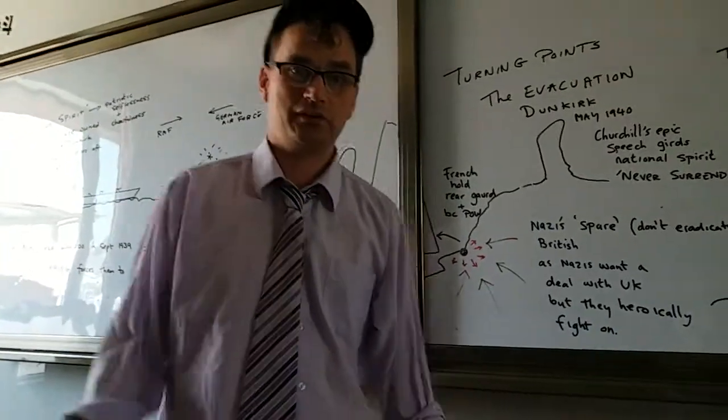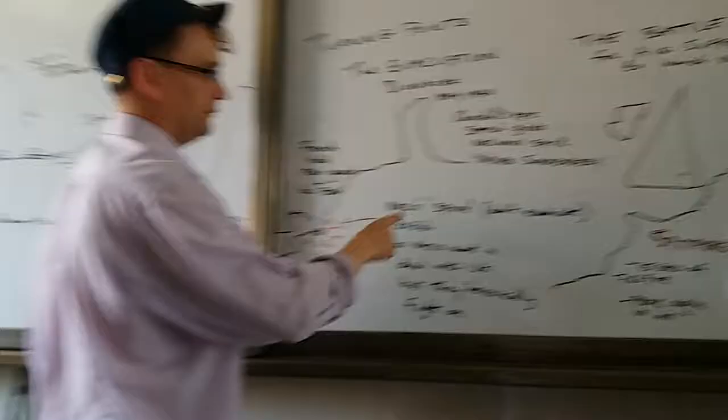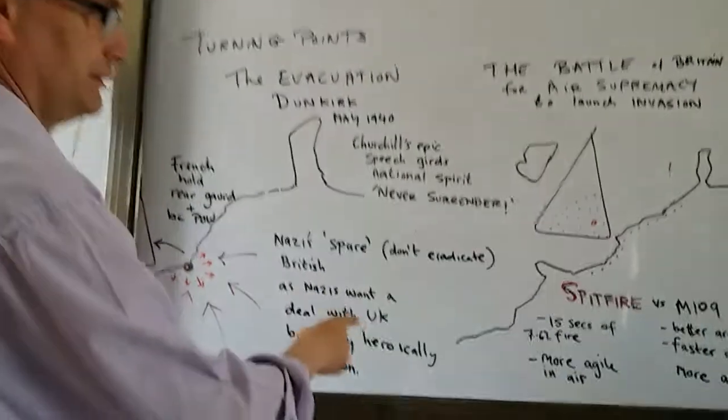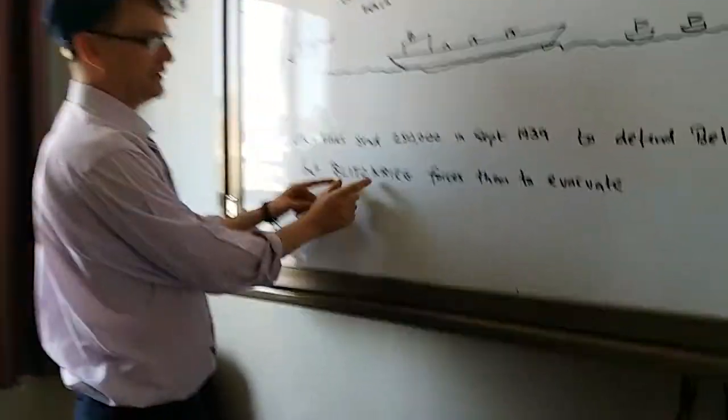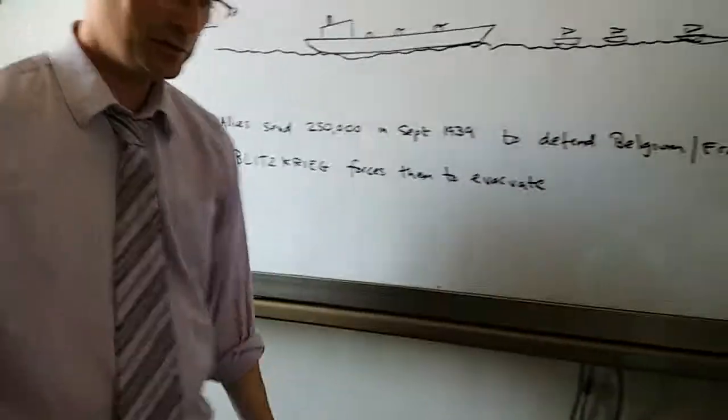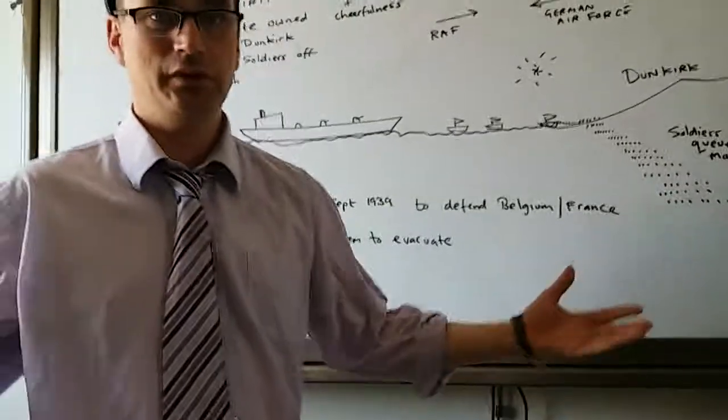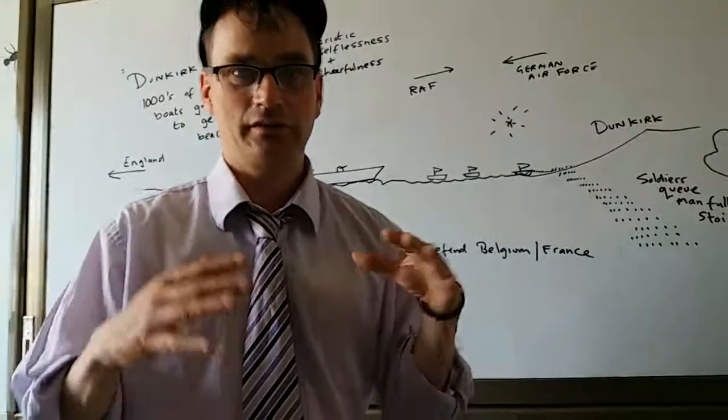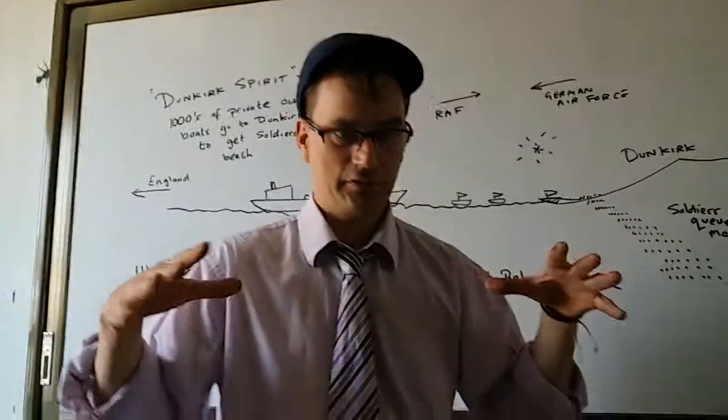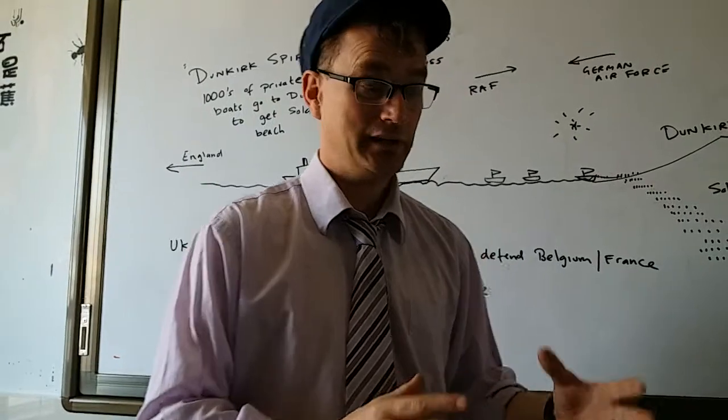because the Germans used Blitzkrieg, which means lightning war. They used paratroopers, super fast tanks, and they just went in straight away. They went round defensive forts and defensive lines. Before you knew it, the British were surrounded, and they needed to get away quickly.